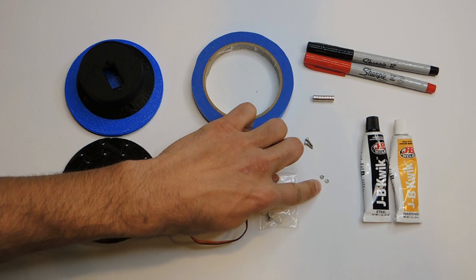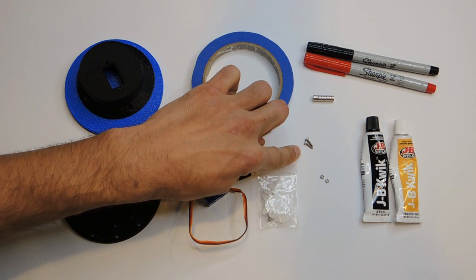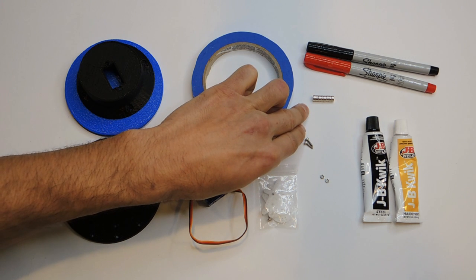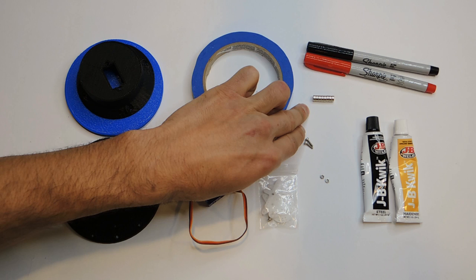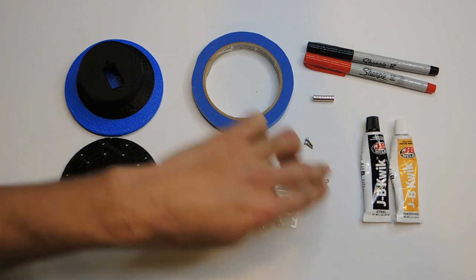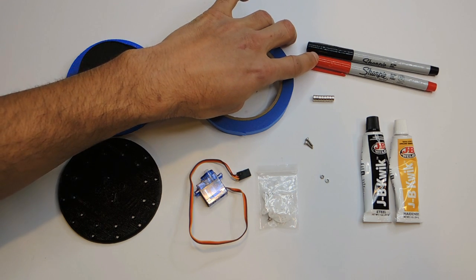Two M2 hex nuts and two M2 x 8mm screws. You're going to need some 6mm diameter x 3mm thickness magnets, some 2 part epoxy, I used JB Quick, blue painters tape, and two different colors of markers.